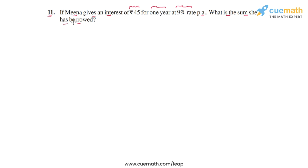This question basically means that on an unknown principal amount that Meena has borrowed, she pays an interest of rupees 45 in one year, and we are also told that the rate of interest is 9% per annum.